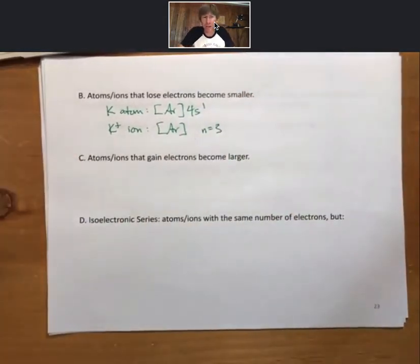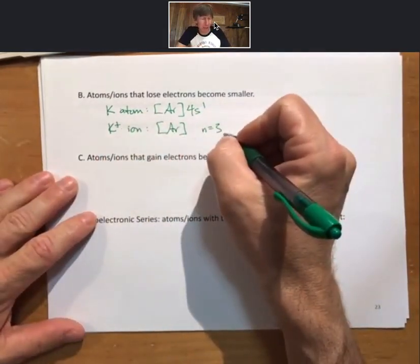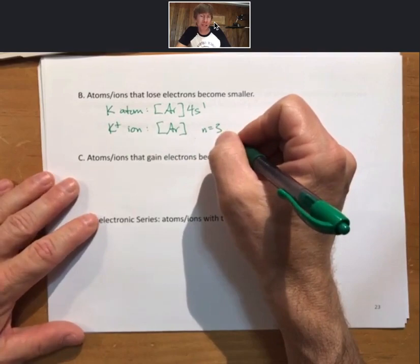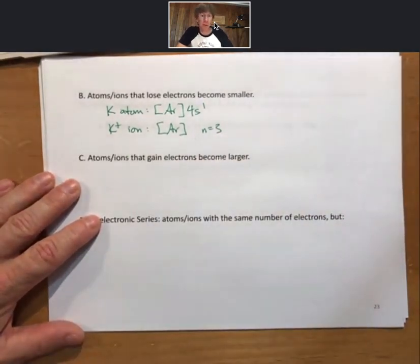And the highest value of n is now n equals 3. So we lost a whole energy level. We know that n equals 4 is a lot larger than n equals 3, n equals 2, n equals 1. So of course it becomes smaller. Another thing to point out is that the potassium ion, while it has the same electrons as argon, argon does have 8 valence electrons. Just all of its valence electrons are now in n equals 3.